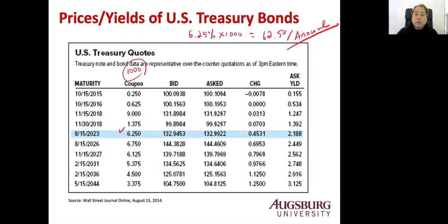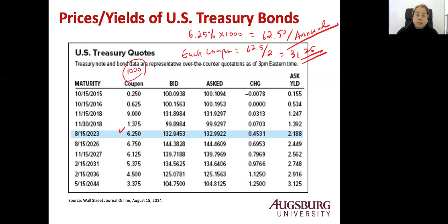If it is semi-annually paid, then it's going to be $31.25. Usually US Treasury bonds pay semi-annual coupons, so each coupon will be $62.50 divided by 2, which is $31.25. That's the six-month coupon. For US Treasury bonds, the coupon is paid in February and August — so every six months.